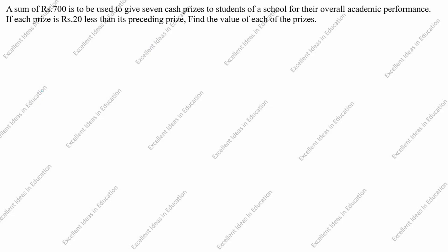A sum of rupees 700 is to be used to give 7 cash prizes to students of a school for their overall academic performance. If each prize is rupees 20 less than its preceding prize, find the value of each of the prizes.